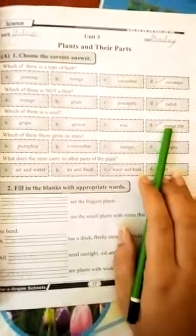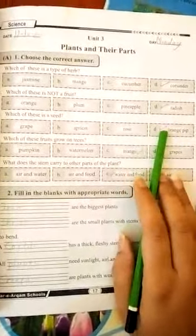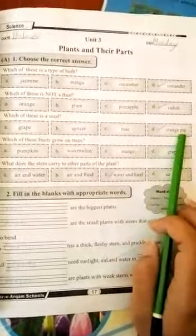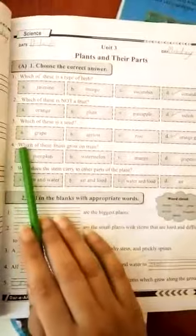Number four, which of these fruits grow on trees? A. pumpkin, B. watermelon, C. mango, D. grapes. Mango is the answer because mango grows on trees. Pumpkin and watermelon are creepers and grapes are climbers, so C is the answer.